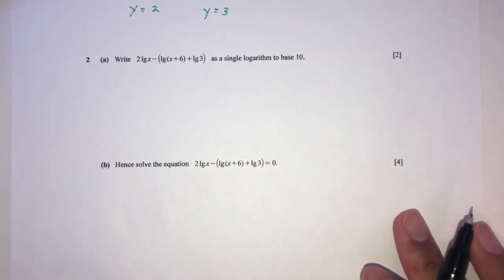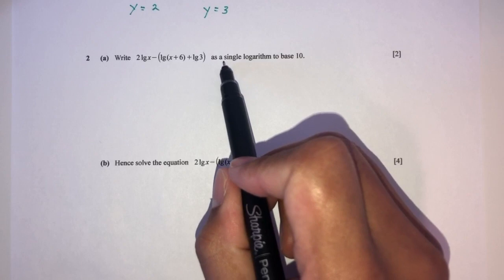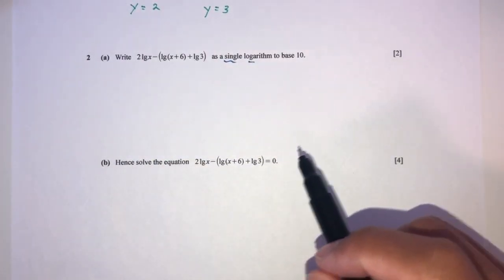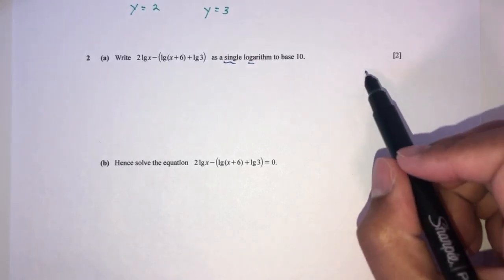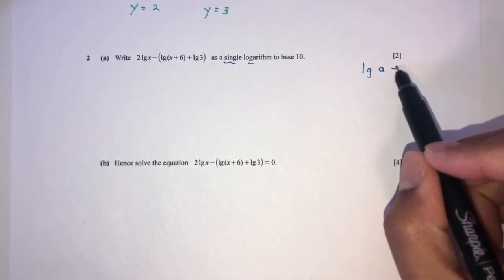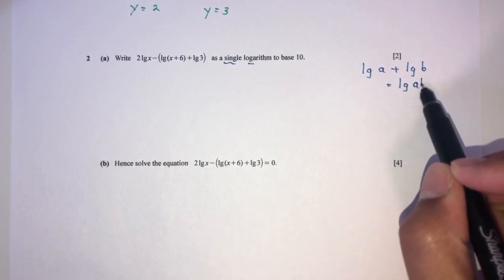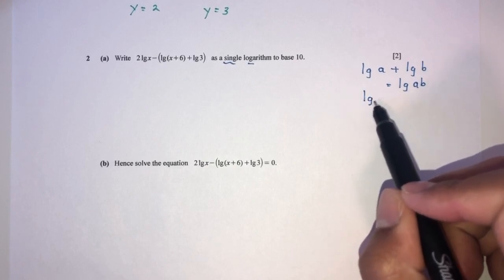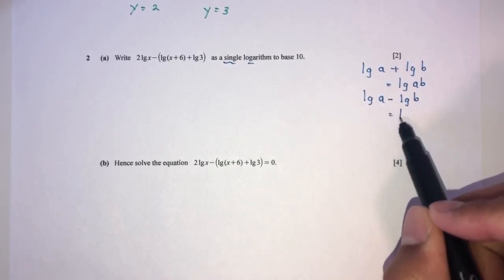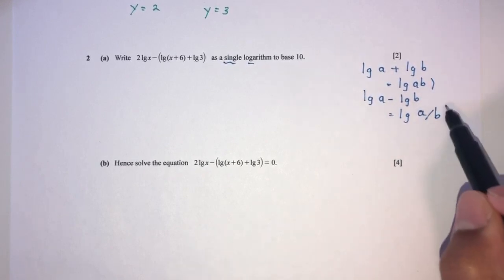Let's move on to question number 2. We have to write the expression as a single logarithm to the base 10. There are a few laws to know: log a plus log b equals log ab, and log a minus log b equals log of a divided by b.